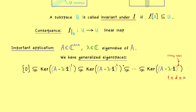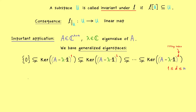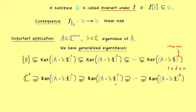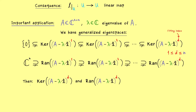That was the description of the generalized eigenspaces. As shown in the last video, we have the same chain for the ranges — the only difference is that the ranges get smaller when we increase the exponent. Otherwise it looks exactly the same and we end at fitting index d. The important thing is that these two subspaces at the end should be invariant under our matrix A.